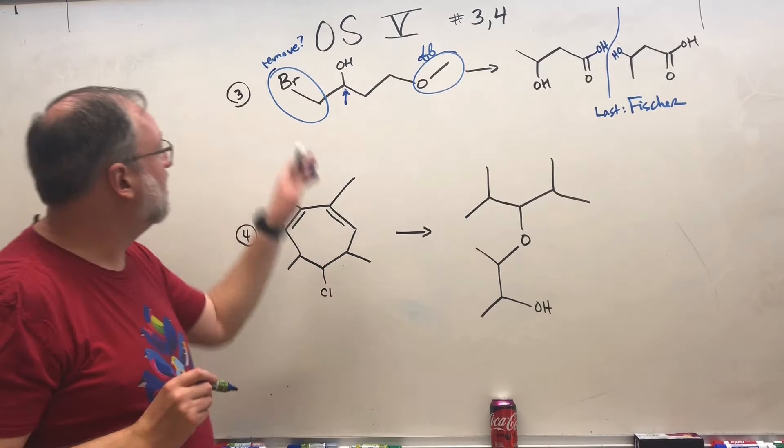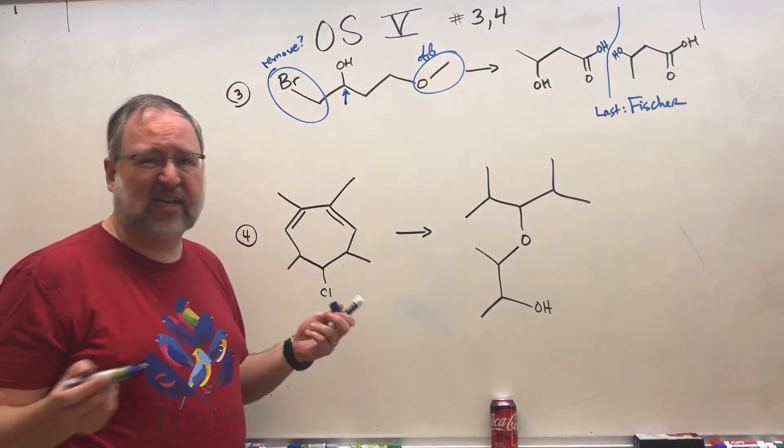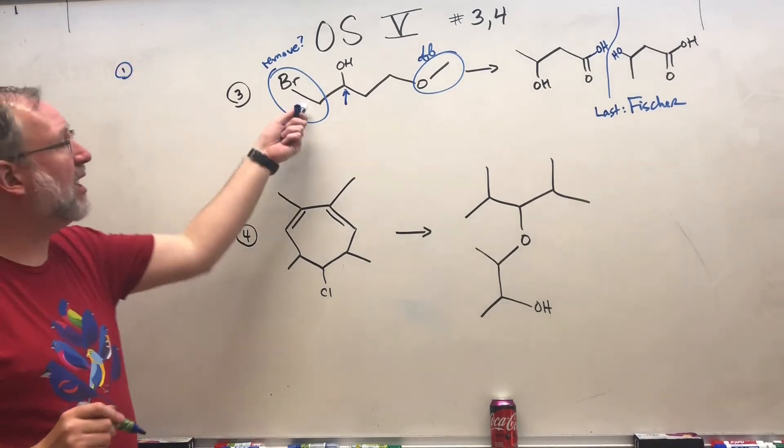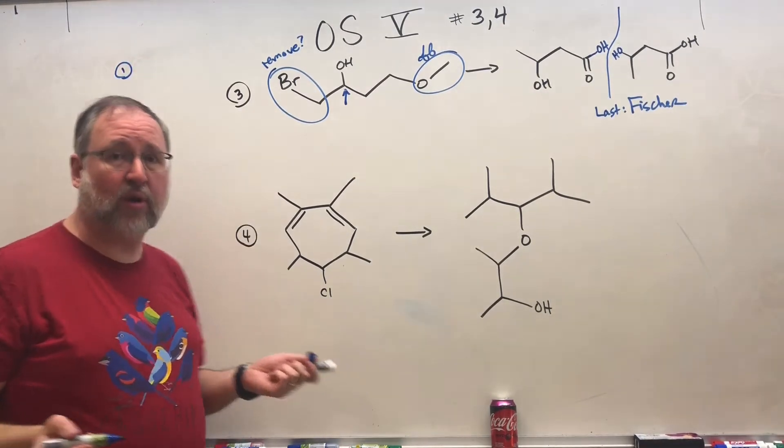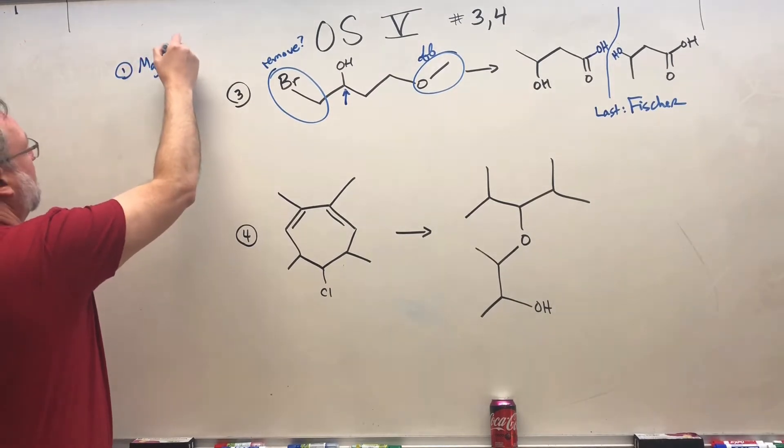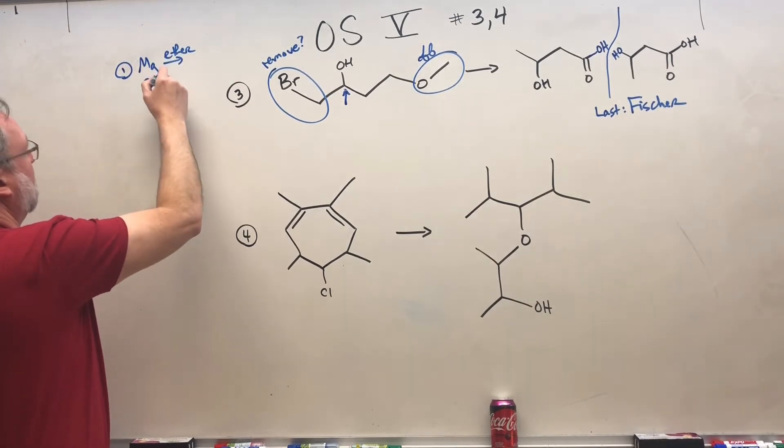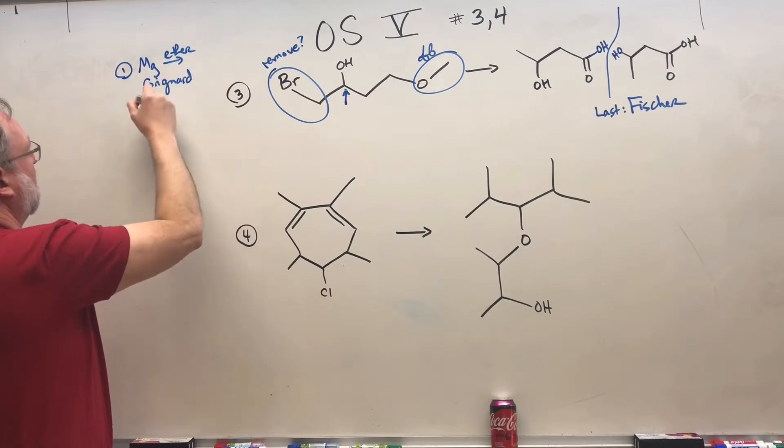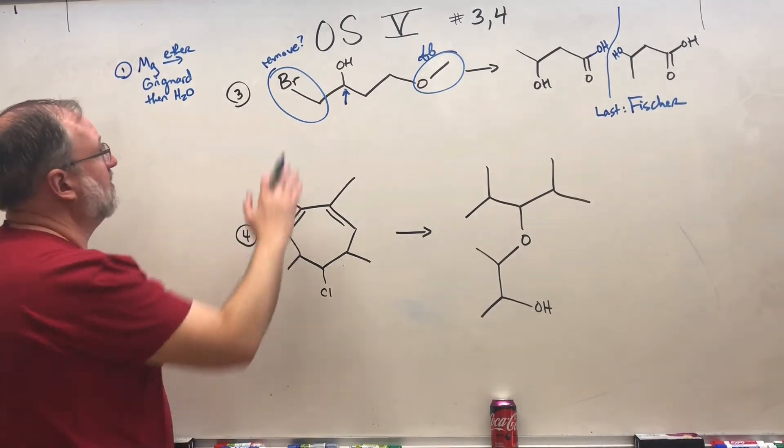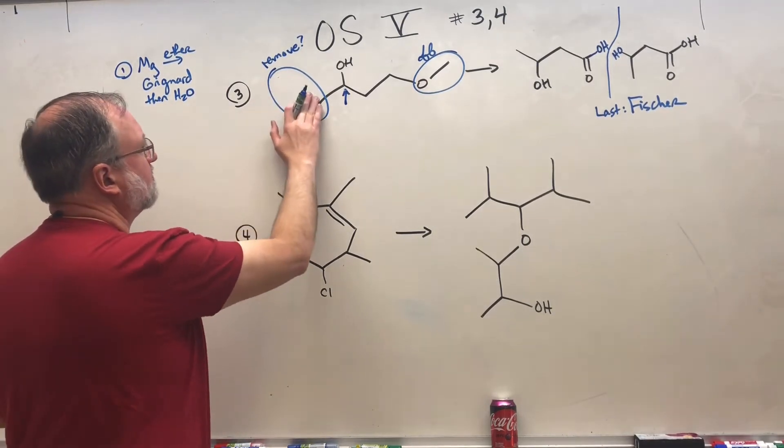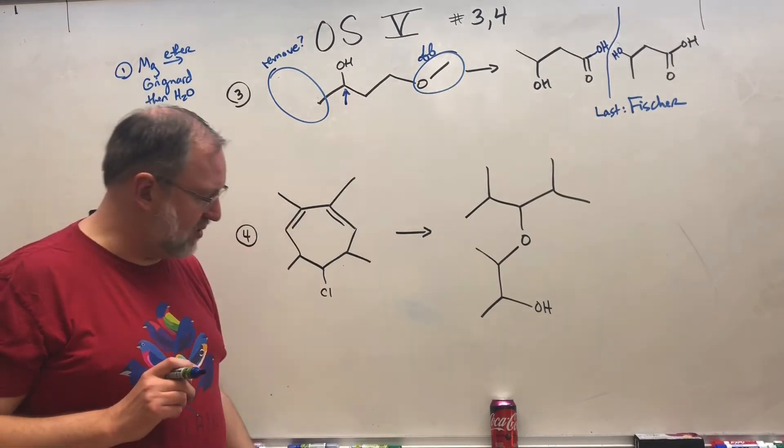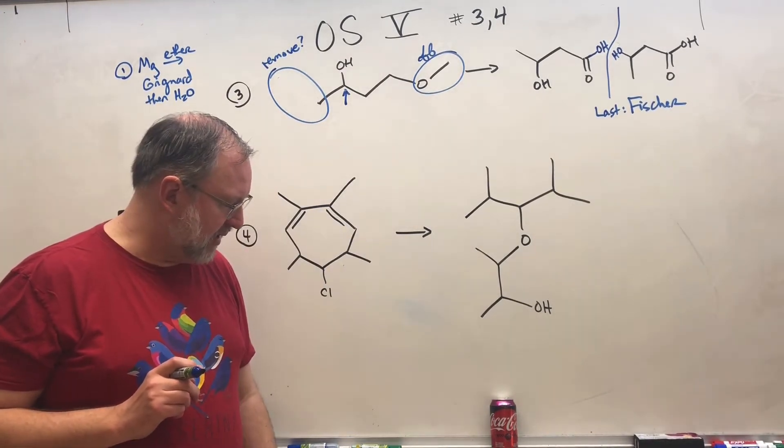Now I have a plan and now I can actually get to work. I'm gonna start with taking off this bit. I don't need it. I don't want it. I'm gonna get rid of it. So the way that you get rid of primary alcohols is Grignard with water. So MG in the presence of ether, that's our good buddy Grignard. Then later we're gonna add water. And that will take this bit off.